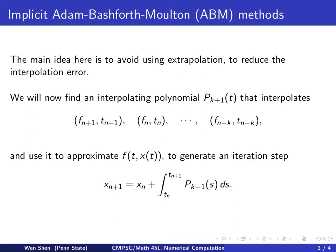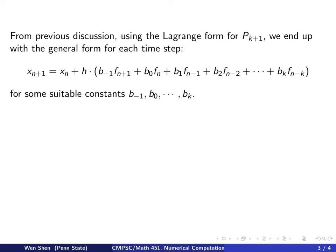Following the previous discussion and using the Lagrange form for the polynomial pk plus 1, we end up with a time iteration where these are all different f values at step n plus 1, n, all the way down to n minus k, and each of them is multiplied by some weights b negative 1, b0, b1, all the way to bk. These constants are just the integral of the cardinal functions over a time step, divided by h, as before.